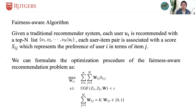So now, we provide a framework which can generate fairness-aware recommendation lists based on a fairness-constrained re-ranking method. Given a traditional recommender system, each user u_i is recommended with a top-k list. Each user-item pair is associated with a score S_ij,